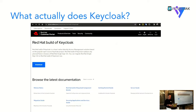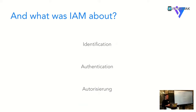I want to briefly recap what Thomas and others introduced this morning. When we talk about Identity and Access Management, what is it really about? We have basically three parts. The first is identification - the identification of the user, of the machine, of an account, or of a device.